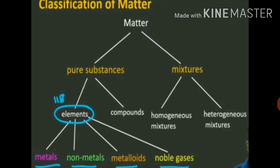In this chapter we have to read about elements. Elements are classified into metals, non-metals, metalloids, and noble gases. This is the chemical classification of matter.